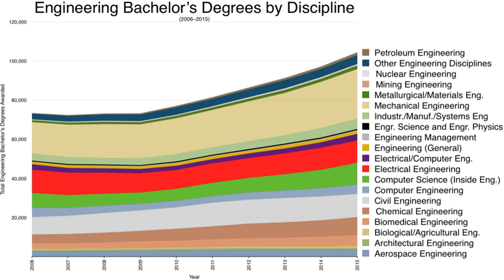Some PhD students also have classes with undergraduate students. Graduates of doctorate studies at a Technical University hold the scientific degree of Doktor nauk technicznych (doctor of technical sciences) or other fields such as doktor nauk chemicznych.